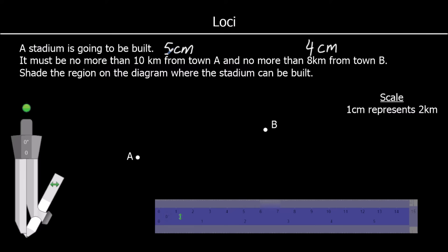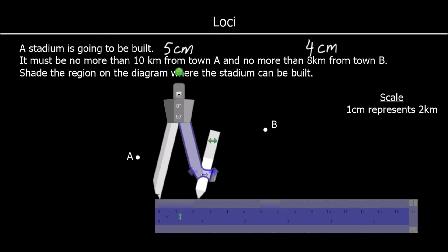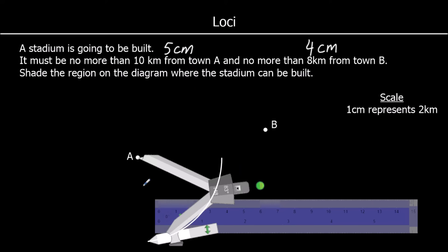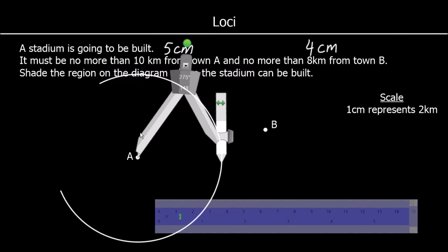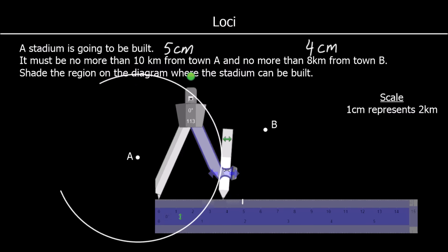So it can be no more than 5 cm from A and no more than 4 cm from B. So we're going to draw all the points 5 cm from A and 4 cm from B.